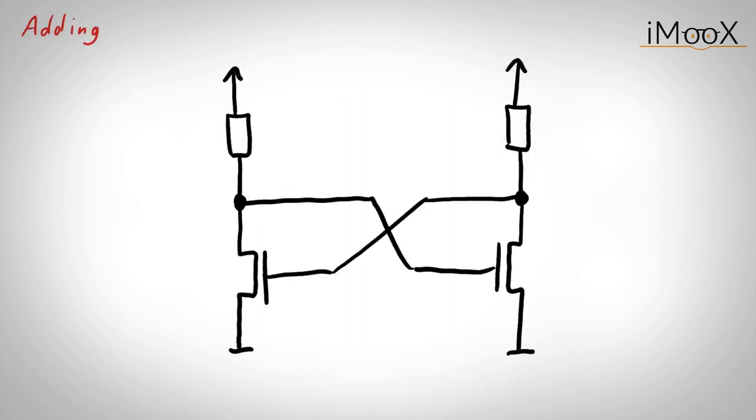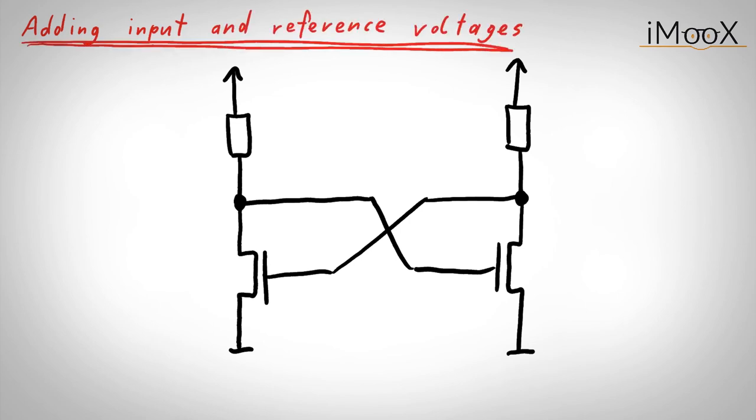The next question we can ask ourselves is, how do we bring the input and reference voltage into this latch? One simple approach would be to replace the two resistors with two transistors and setting the gates to either the input or reference voltage. Now, we have the possibility to create a difference in the two branches and to make the latch flip.